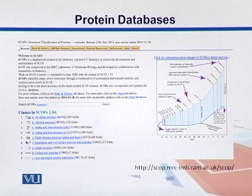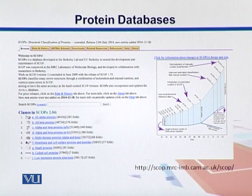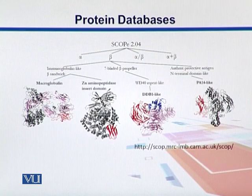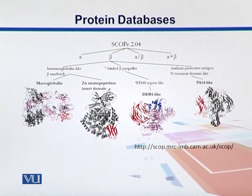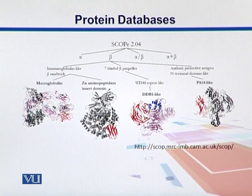SCOP is a similar effort that utilizes different structural elements of proteins to classify them based on structural elements like family, fold, superfamily, domains, and classes — where class is the broadest level in the SCOP hierarchy. For example, we have a class containing all alpha helices. When a linear protein sequence of amino acids folds around itself, it forms secondary structures recognized as alpha and beta. SCOP classifies proteins on the basis of those structures.